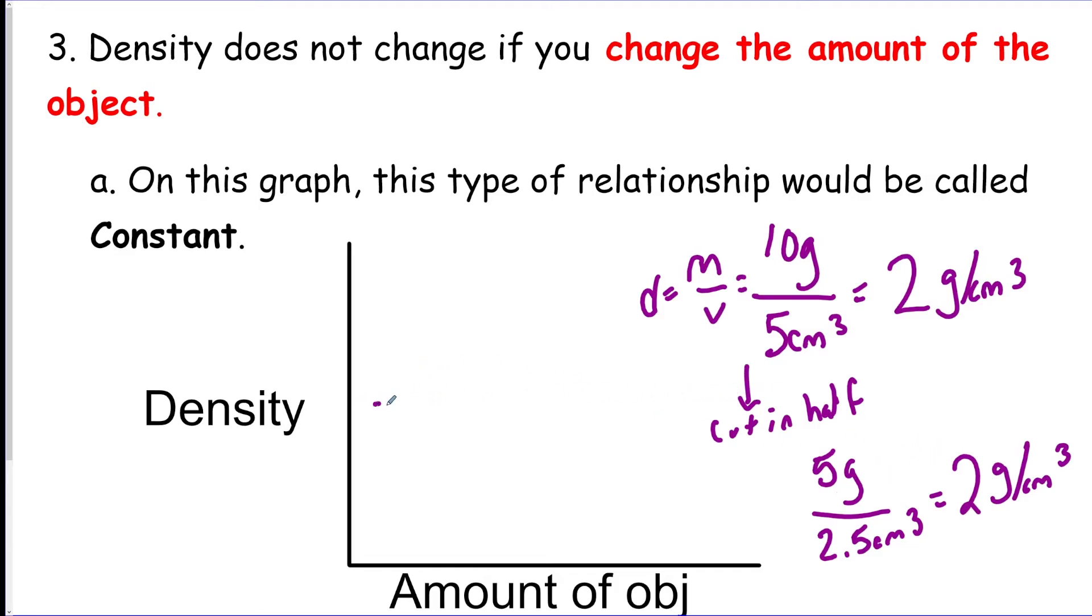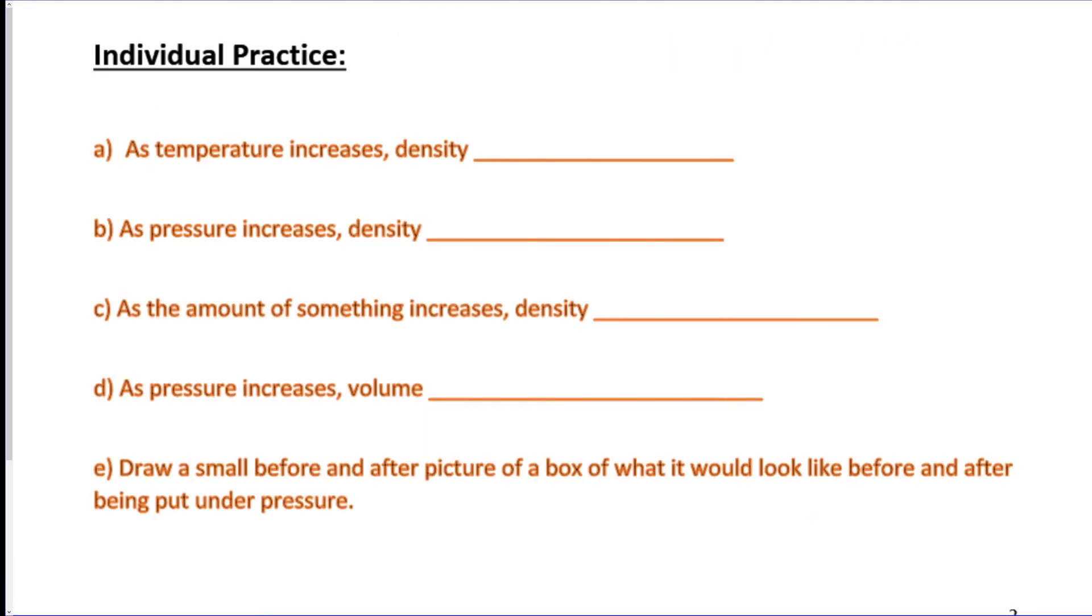So the relationship on a graph would look like this: it would be constant. All right, so now we could do a little summary. If you want, you can pause the video and try these yourself, and then I'm going to end up going over them. So as temperature increases, it gets really hot, so the molecules spread out. Remember, they were close and you heat it up and they spread out, so density is less packed, so it drops.